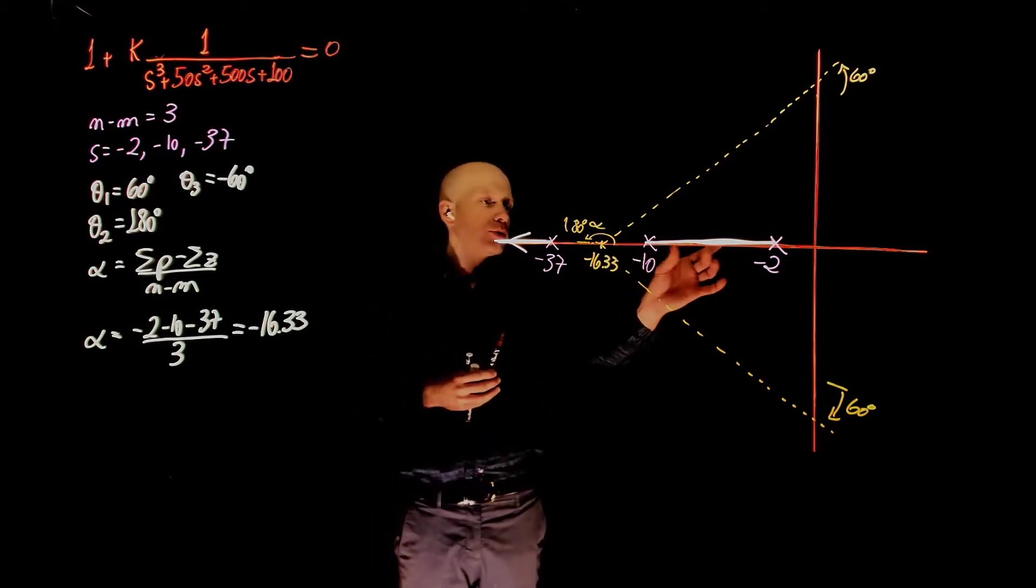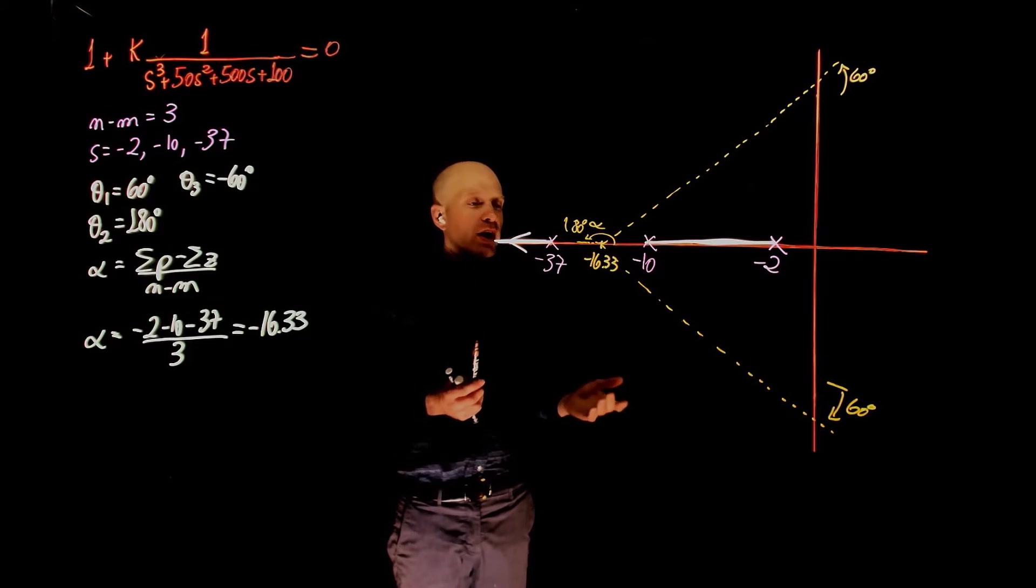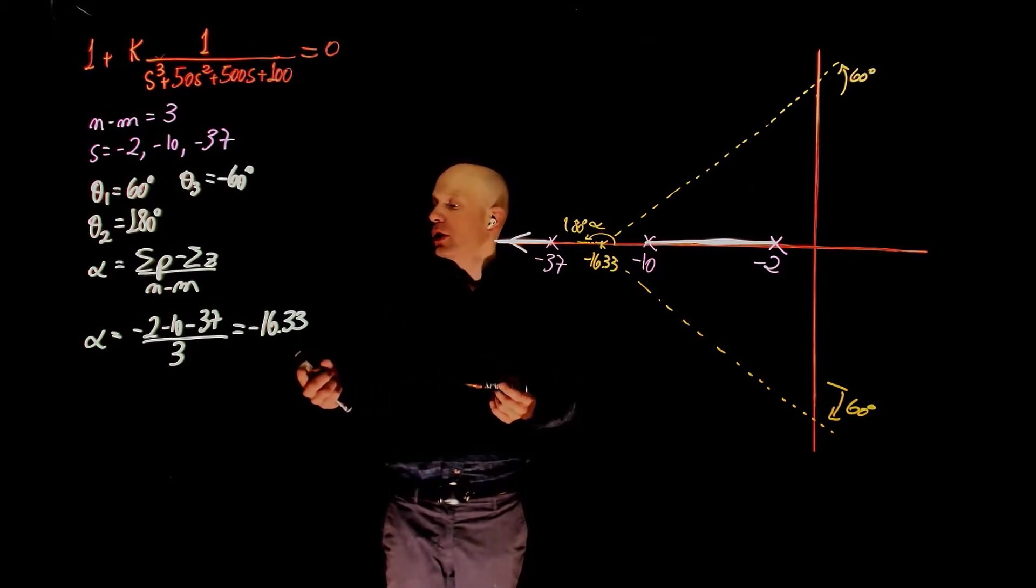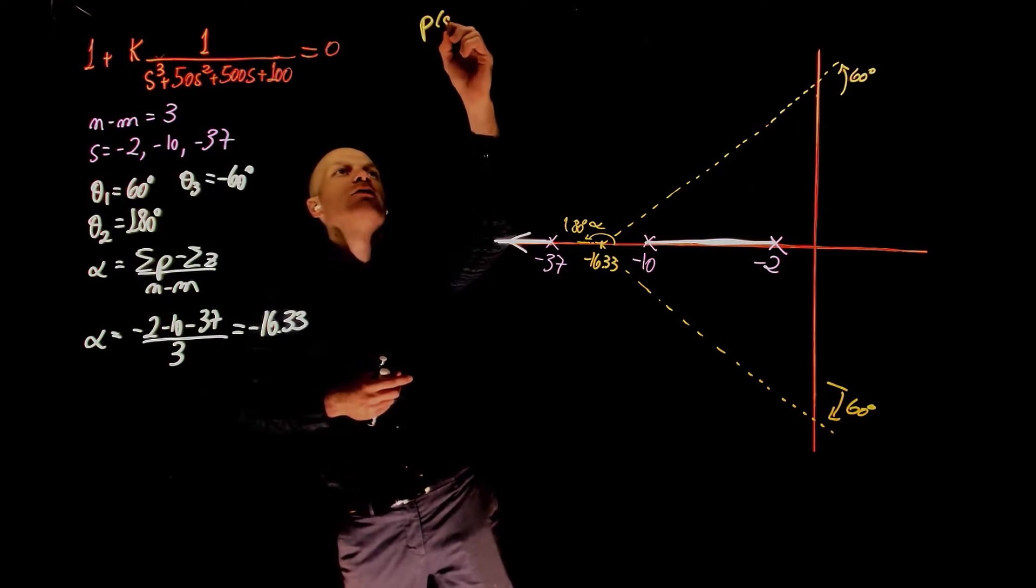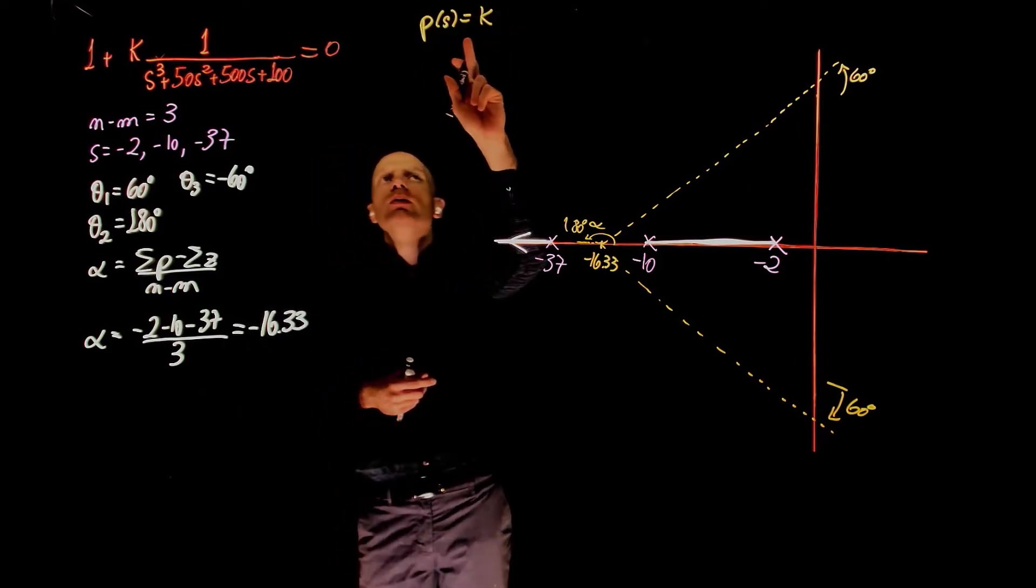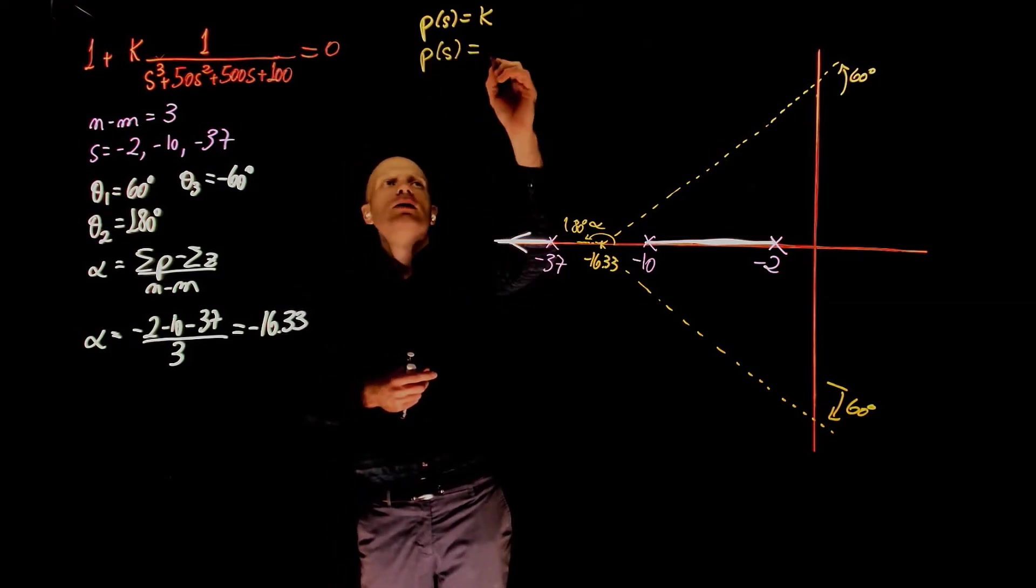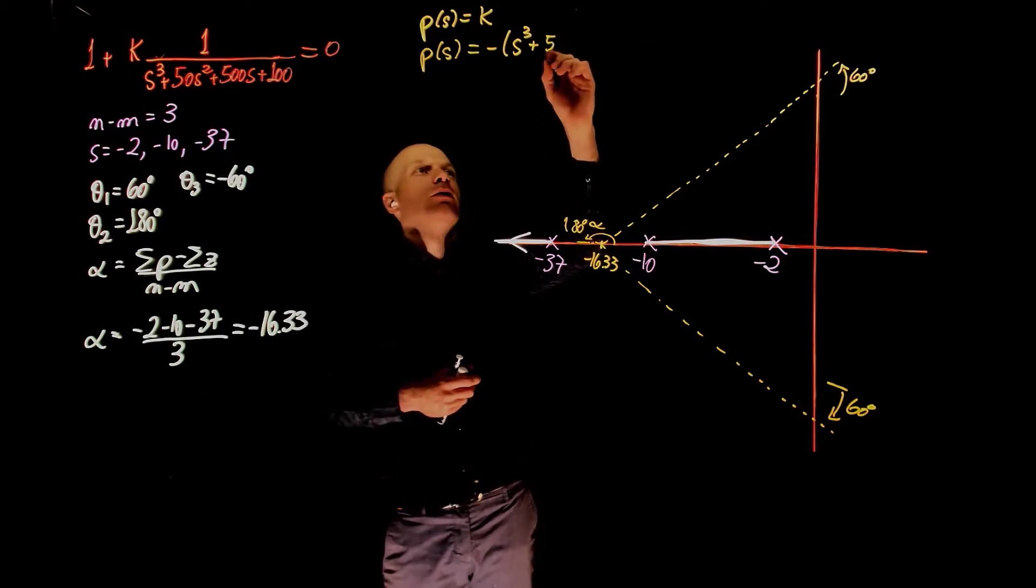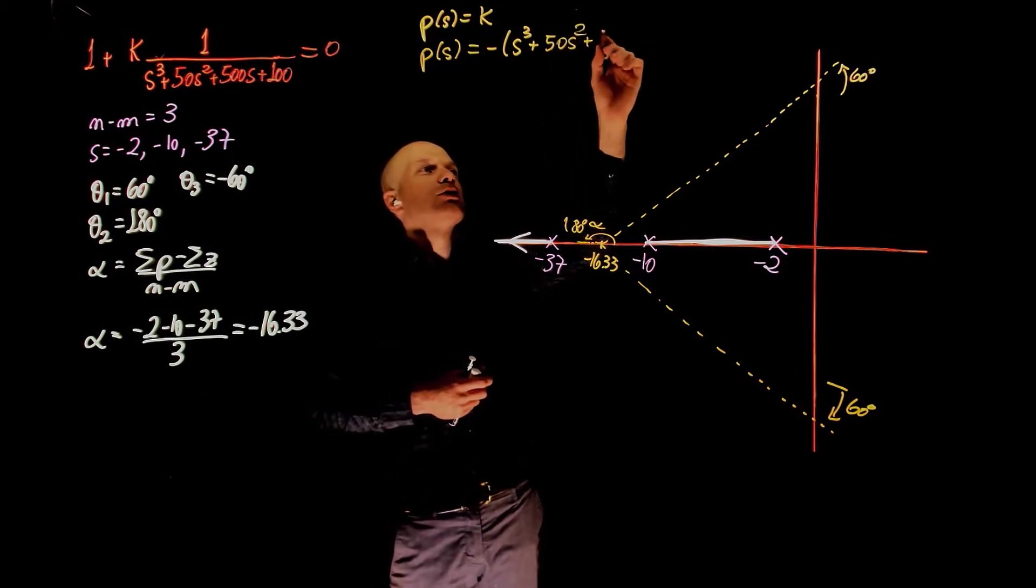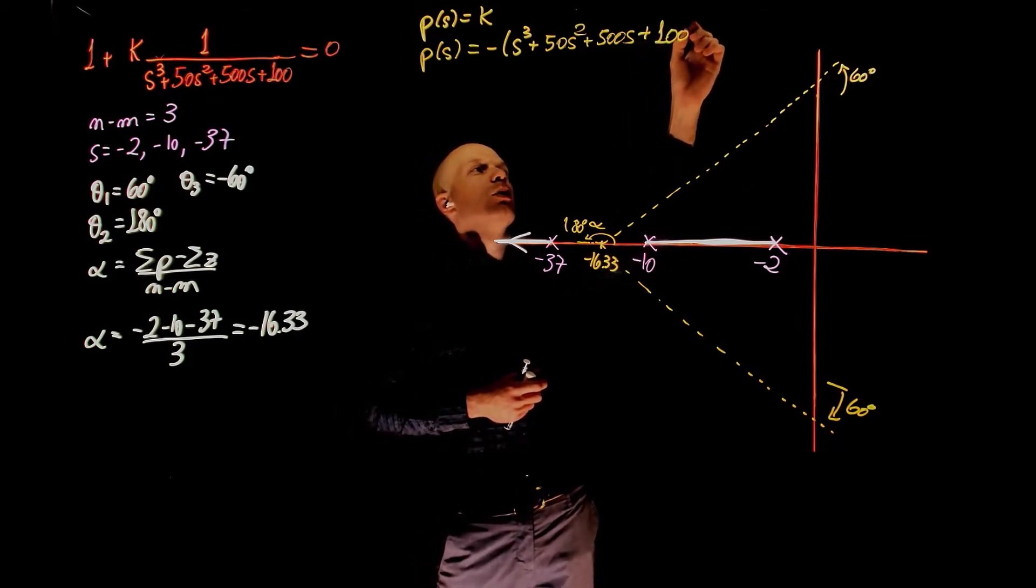Now where exactly do these two poles come together and break away from the real axis? To find that point, we need to find the breakaway point. And to find that, we again set P of s equals to k. Replace P of s in this expression, isolate for it. P of s is negative s to the power of 3 plus 50s squared plus 500s plus 100.